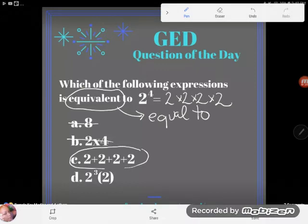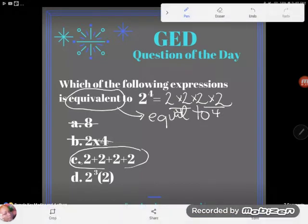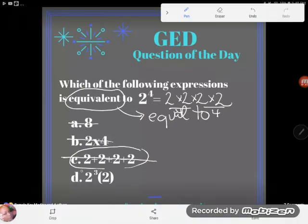So a lot of people get tricked by this answer right here, but if I did two times two times two times two, well two times two is four, this two times two is also four, and four times four gives me 16, which is not the same thing that two plus two plus two plus two gives me. So these are obviously not equivalent.